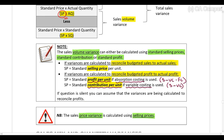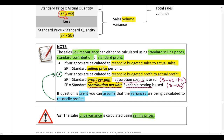If the question is silent — which is normally the case — you can assume that variances are being calculated in order to reconcile profits, meaning reconcile the budgeted profit to the actual profit. In that case, check whether absorption costing or variable costing is used. If absorption costing is used, you are going to use the standard profit per unit in your calculations.